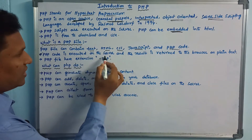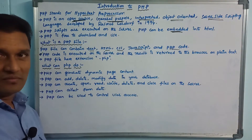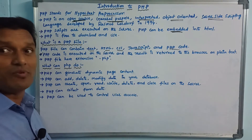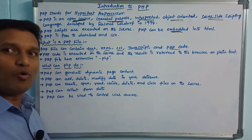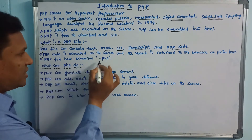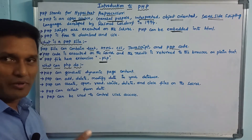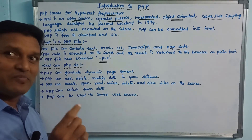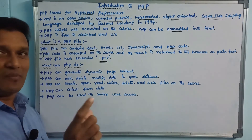PHP code is executed on the server, and the result is returned to the browser as plain text. PHP files have the extension .php. HTML files use .html and CSS files use .css, but PHP files use the .php extension.